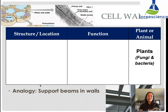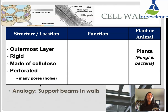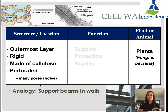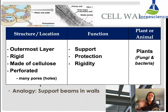Cell walls — an analogy would be like support beams in walls. Their structure is that they are the outermost layer of a plant cell. They are incredibly rigid and made up of cellulose. Because they are so thick and rigid, they must be perforated — meaning having holes — to allow materials to still get in and out of the cell. Their function is to support plant cells, provide an extra layer of protection, and provide rigidity so that plants don't flop over when there isn't enough water pressure to keep the plant upright. Cell walls are found in plants, but also in some fungi and bacterial cells.